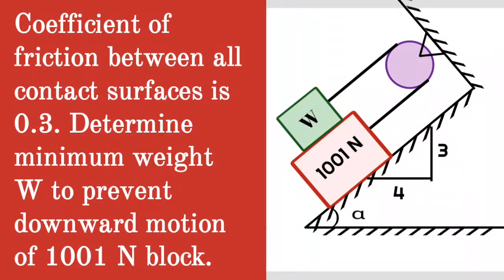Given question: the coefficient of friction between all contact surfaces is 0.3. Determine the minimum weight W to prevent downward motion of the 1001 Newton block.